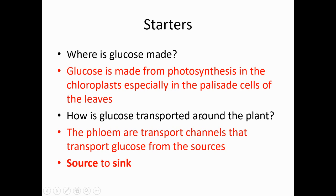How is glucose transported around the plant? We looked at the xylem and the phloem last lesson. The phloem is designed for translocation — the movement of sugars and amino acids through the plant. It can happen in both directions and goes from source to sink. The source is where the sugars are made, i.e., the leaves, and the sinks are where it is stored or used — for example, down to the roots or tubers like a potato.